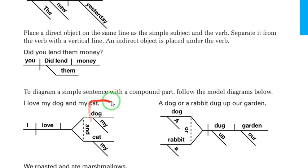As for the compound parts, sentences that have compound subjects or compound predicates. For example, I love my dog and my cat. I is the simple subject. The verb is the simple predicate, and it's written on the same horizontal line.